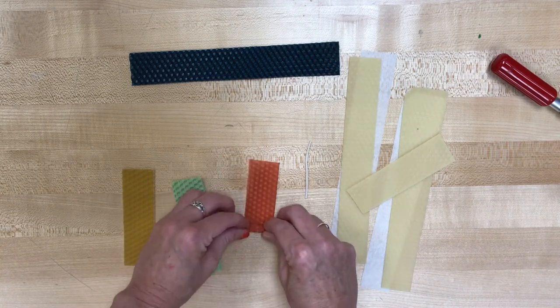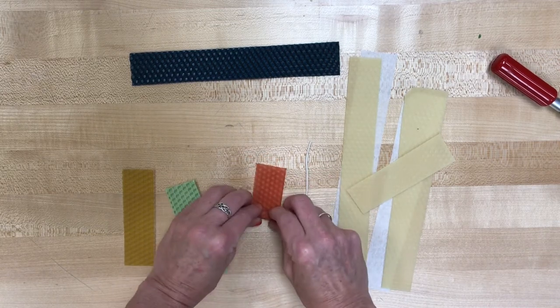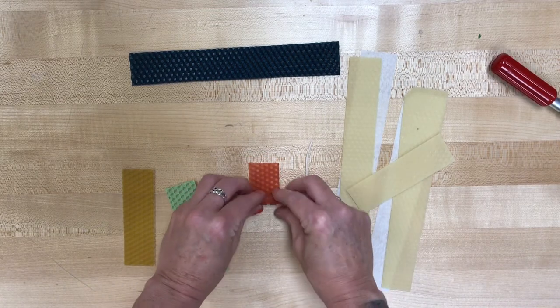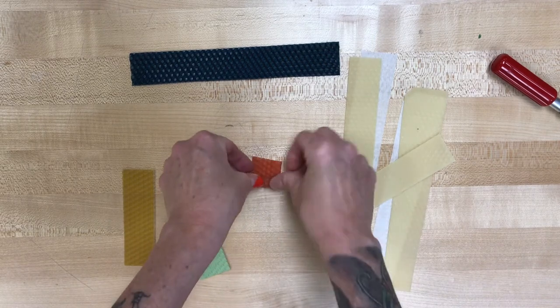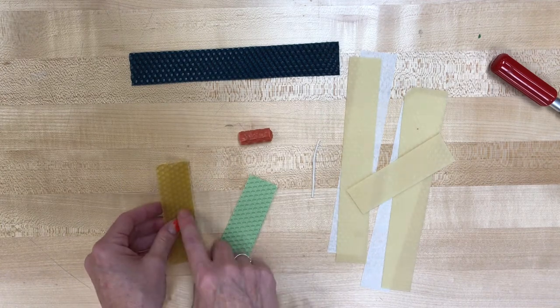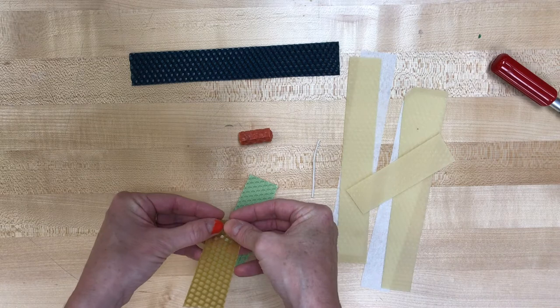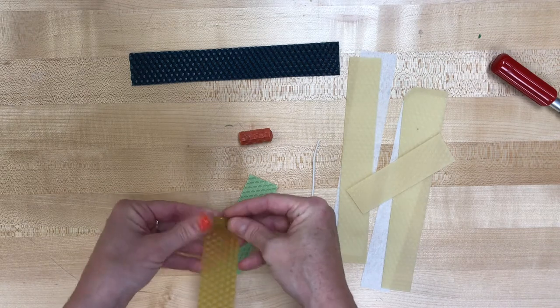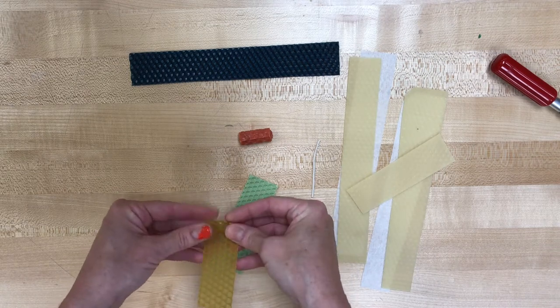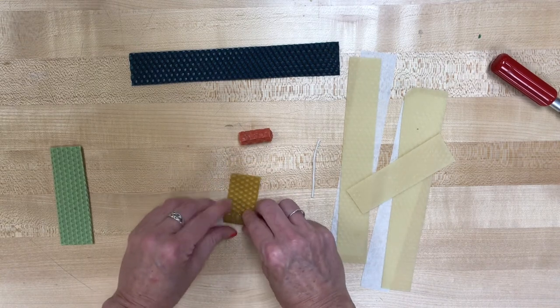Once you get it started, you can lay it flat and it should roll up pretty quick and clean. Make sure to keep those edges even. We're going to do the exact same thing with the yellow beeswax. Soften it up a little bit, then start with that tight roll to make a cylinder. Get it on the table to keep those edges nice and even.